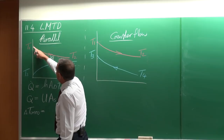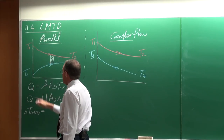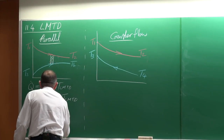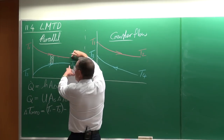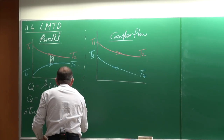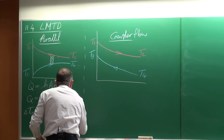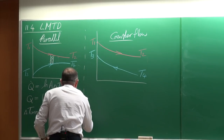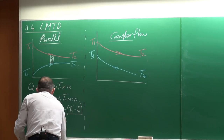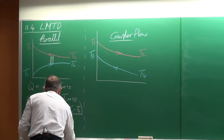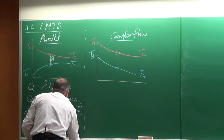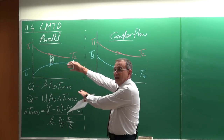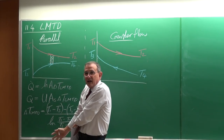The LMTD can be written as: T1 minus T3, minus the quantity T2 minus T4, all divided by the natural log of the ratio (T1 minus T3) over (T2 minus T4). If you do it like that, you should not get a negative LMTD.